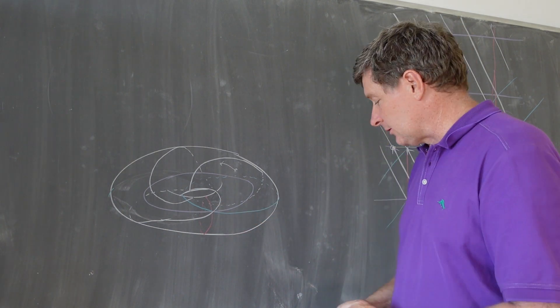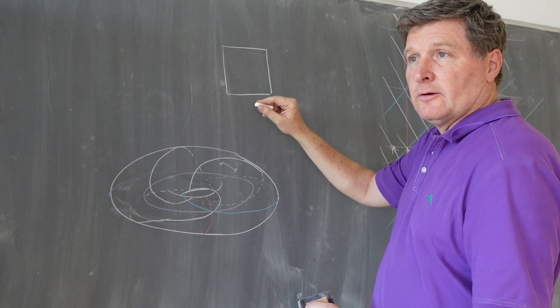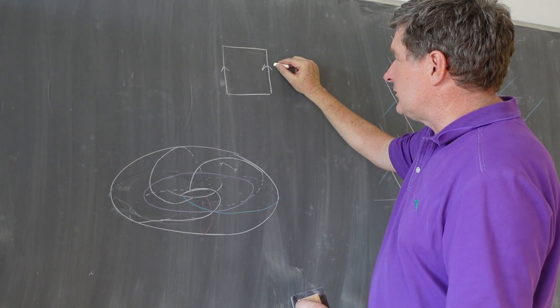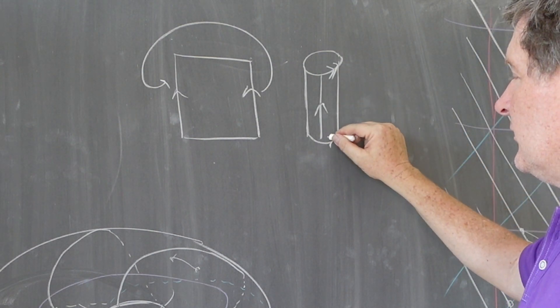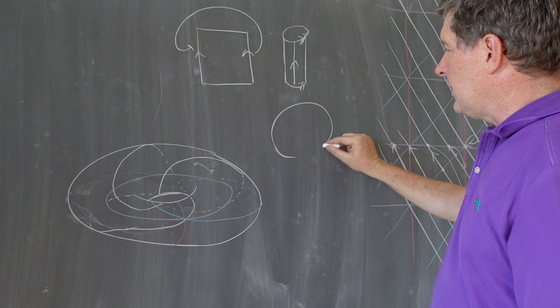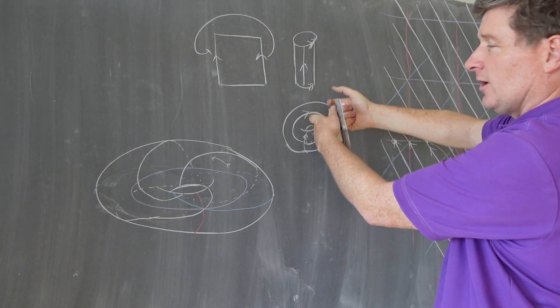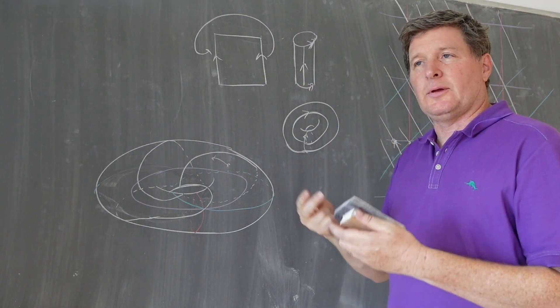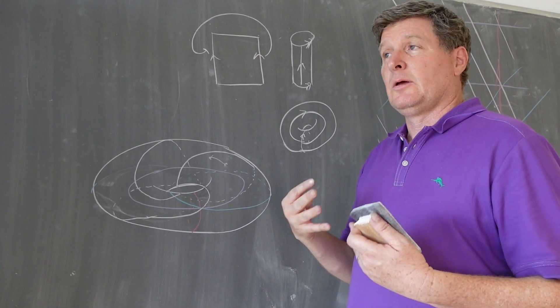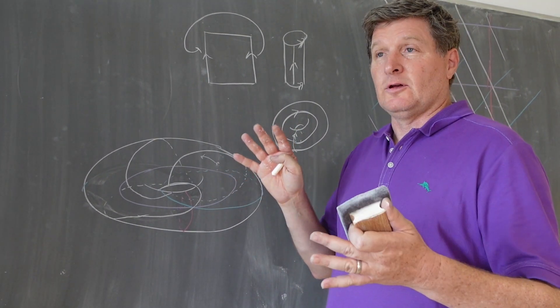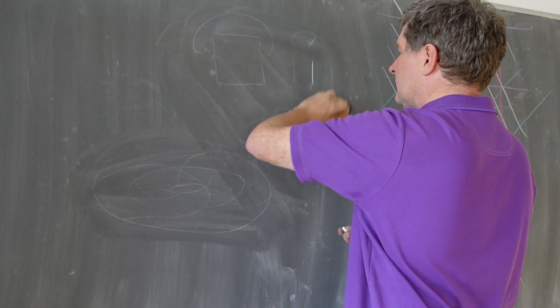You can get this torus by taking a rectangle and gluing opposite sides together. You glue them together to get a cylinder, and then glue these two ends together, curl it around, and get a two-dimensional torus like I've drawn here. Similarly in three dimensions, we can make three-dimensional spaces by taking polyhedra. A simple example would be the three-dimensional cube.